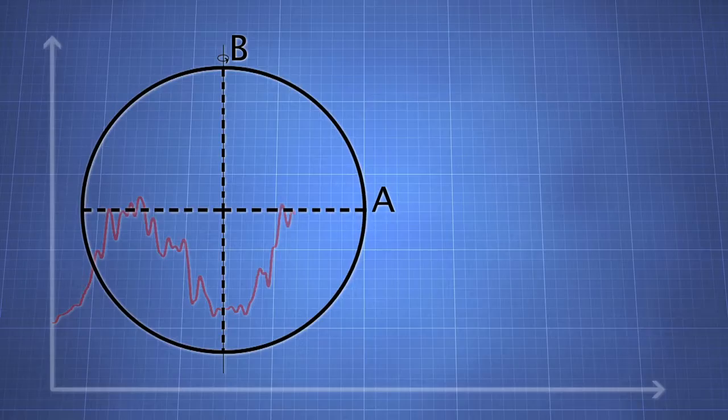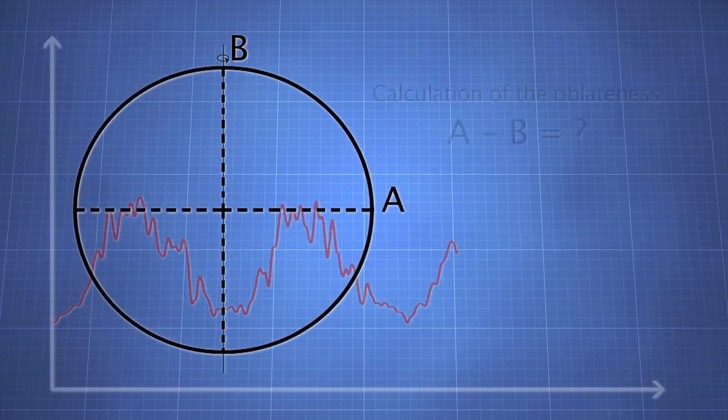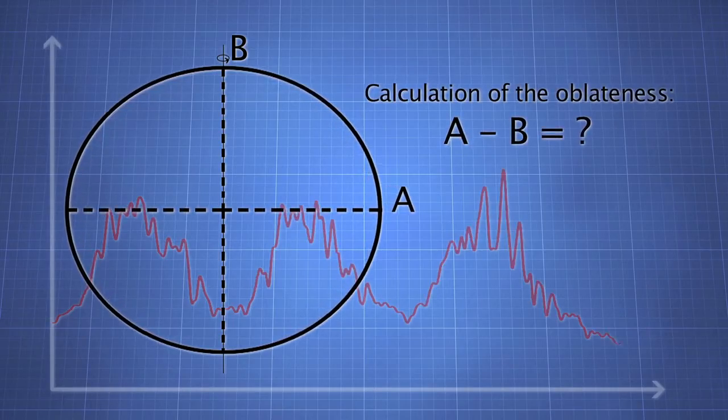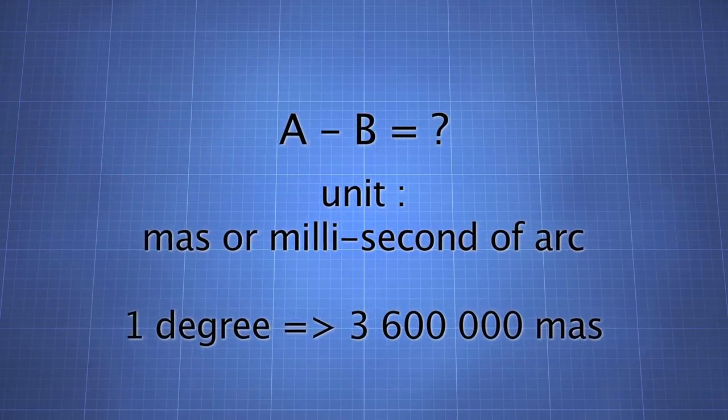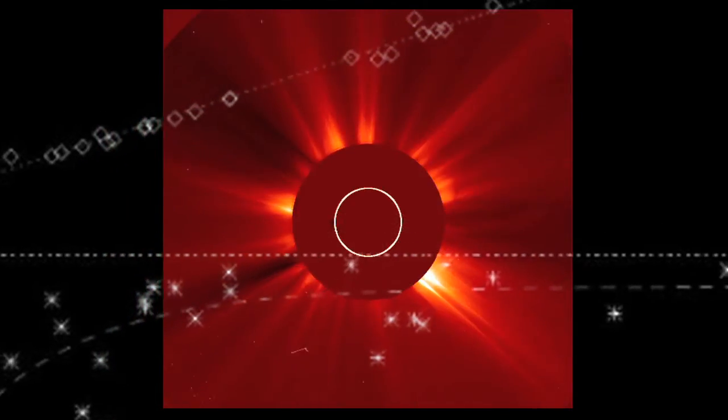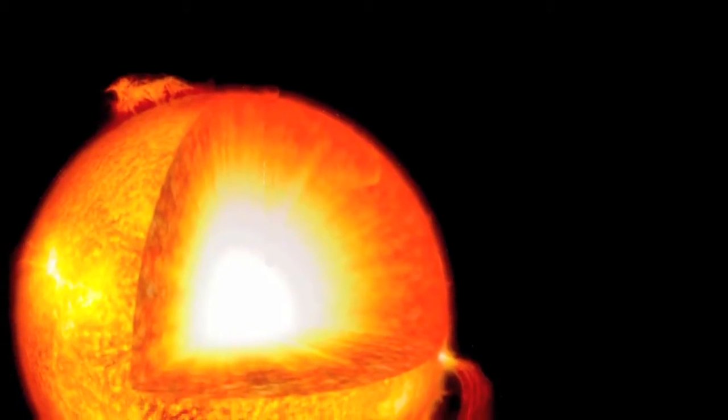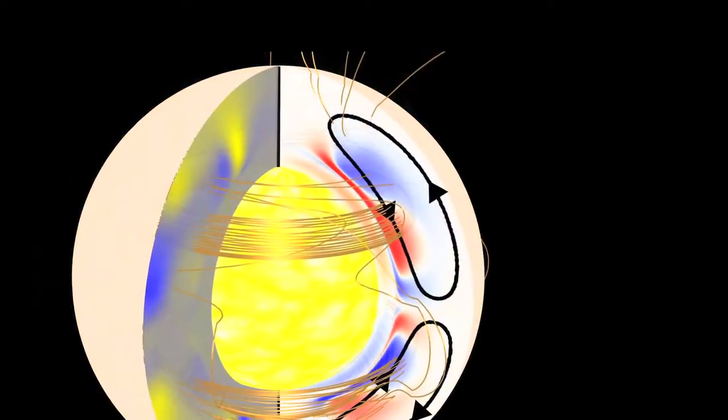But why does the Sun's oblateness arouse such an interest? The measurement of the Sun's oblateness gives precious indications on the rotation of the interior layers of the Sun and on the magnetism under the surface.